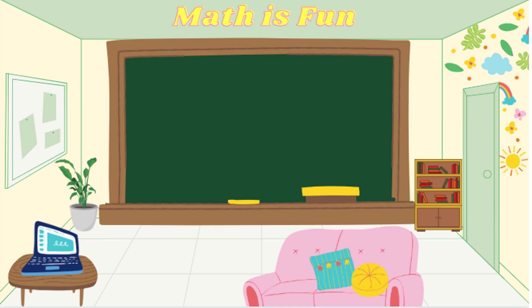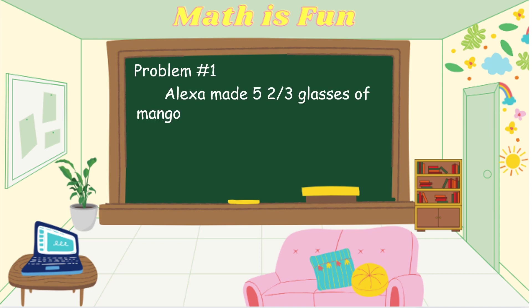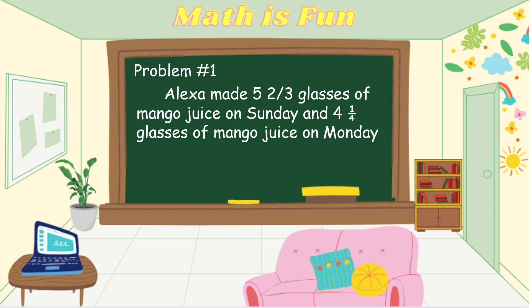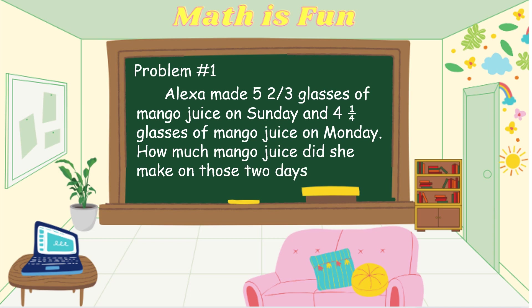Our first problem is an example of a routine problem. Alexa made 5 and 2 thirds glasses of mango juice on Sunday and 4 and 1 fourth glasses of mango juice on Monday. How much mango juice did she make on those 2 days combined?